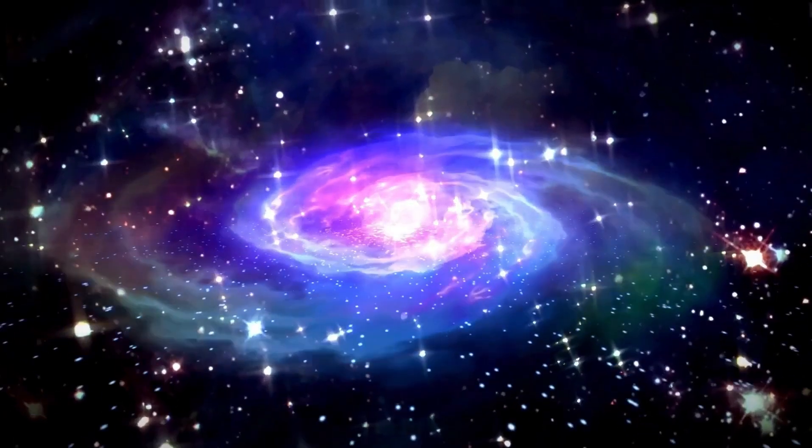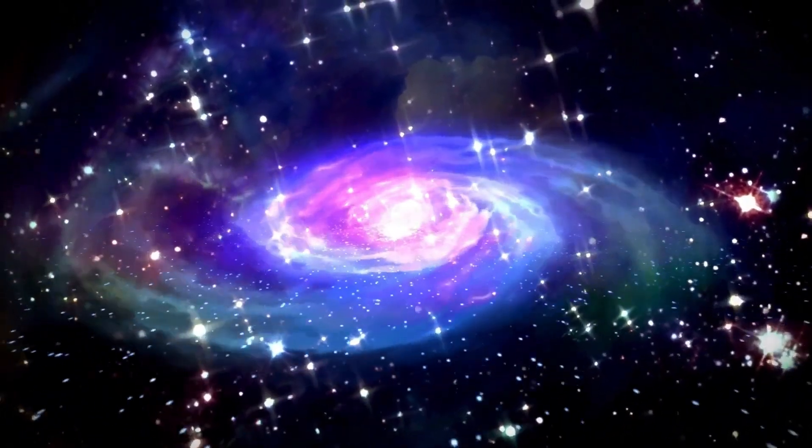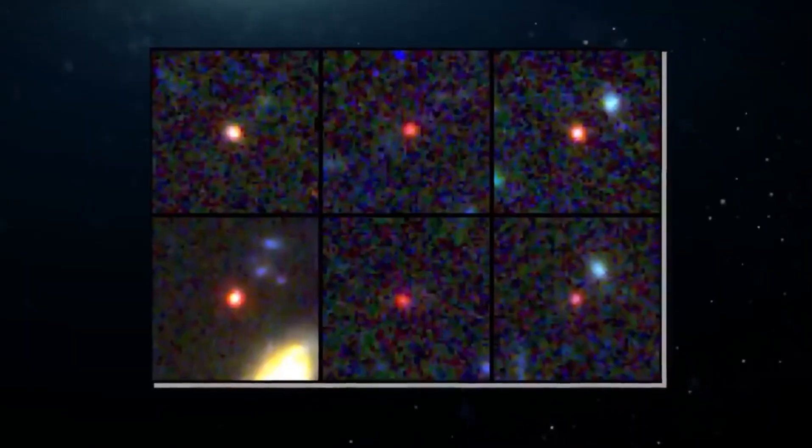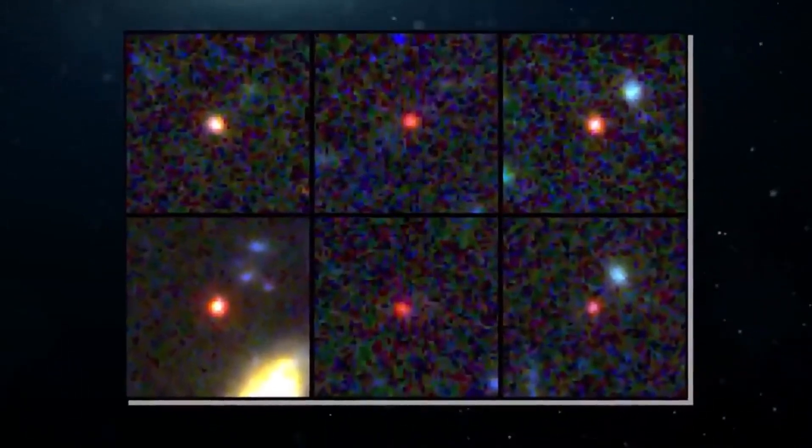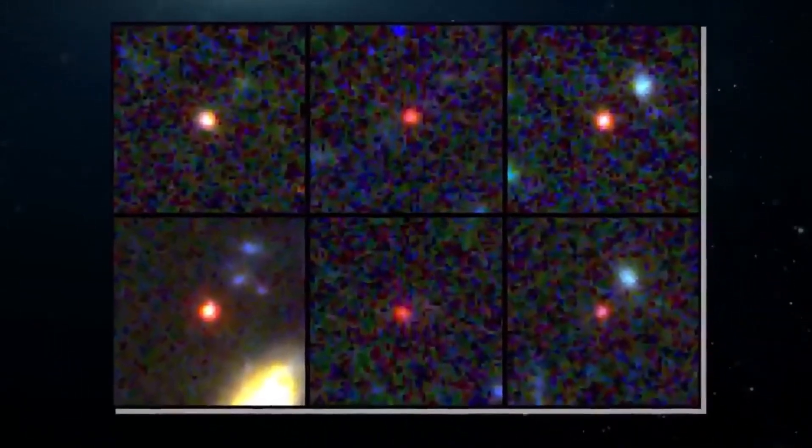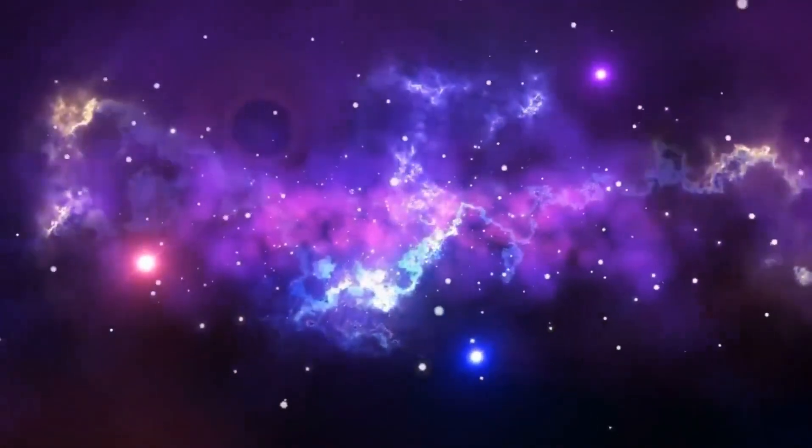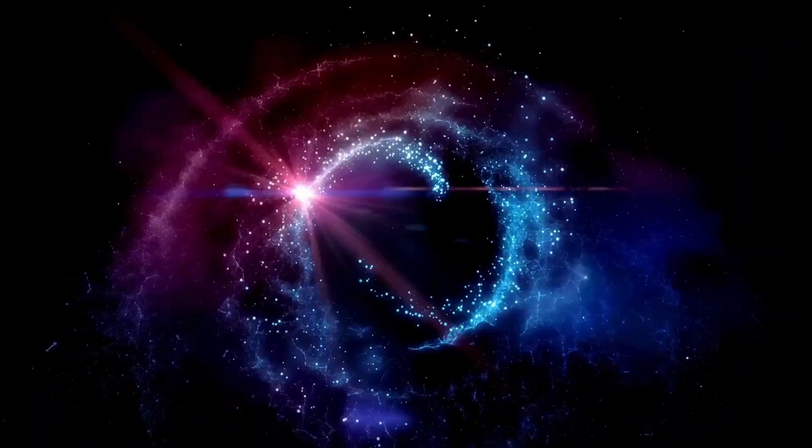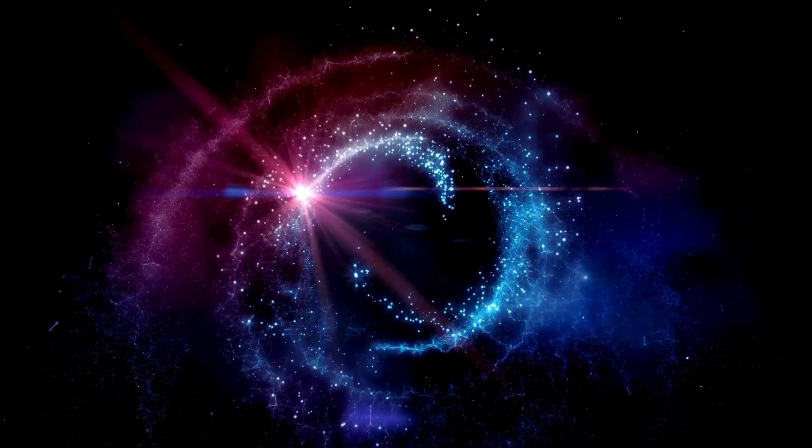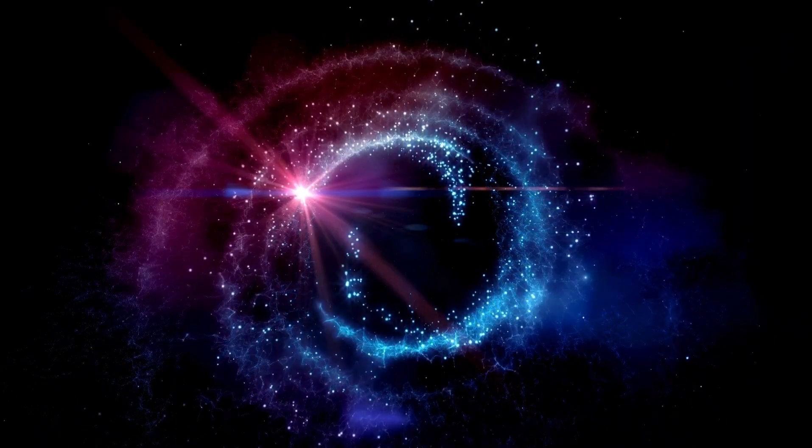Gravitational lensing is a phenomenon predicted by Albert Einstein's theory of general relativity. When massive objects such as black holes warp the fabric of space-time around them, light from distant objects passing near these massive bodies experiences a bending in its path. This results in a visual distortion or magnification of the object's image. Massive bodies such as stars or black holes are especially effective in causing significant gravitational lensing due to their immense gravitational attraction.